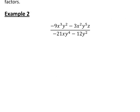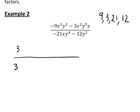Let's look at a second example. Once again we have a mixture of letters and numbers. Looking at the numbers — ignoring any negative signs initially — we have a 9, a 3, a 21, and a 12. The highest common factor of those numbers is 3, as all of them are divisible by 3. So we will be able to take 3 out as a common factor on both numerator and denominator.